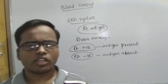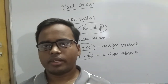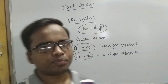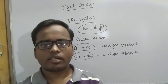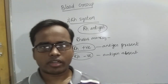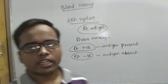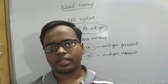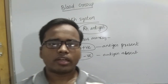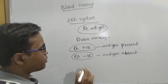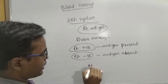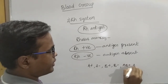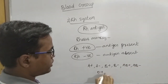For transfusion of blood, both the ABO system and the RH system are very very necessary. If a mismatch occurs, the patient may die. RH positive means antigen is present, and RH negative means antigen is absent. So a person's blood group is expressed as A positive or A negative, B positive or B negative, AB positive or AB minus, O positive or O negative.